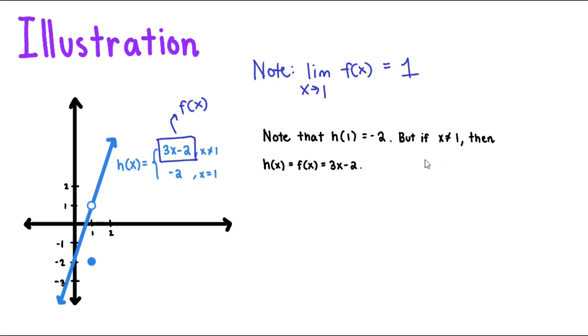Therefore, we know that this must also be the limit of h of x as x approaches 1 since f of x and h of x are the same. Thus, the limit of h of x as x approaches 1 is equal to 1.